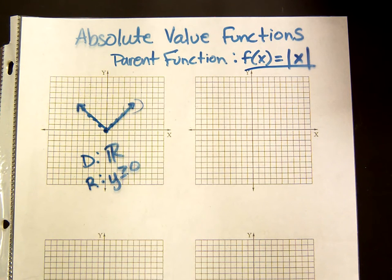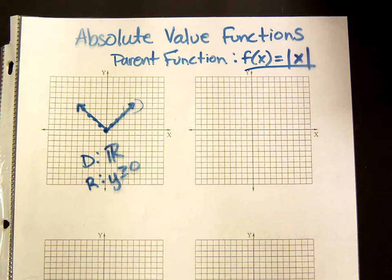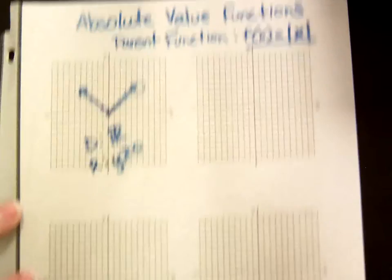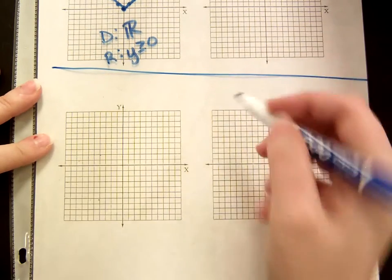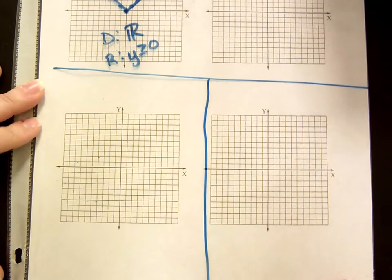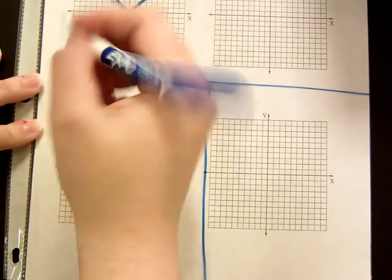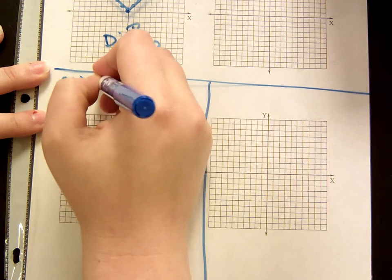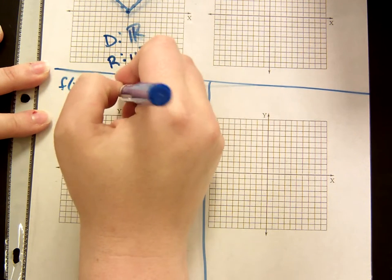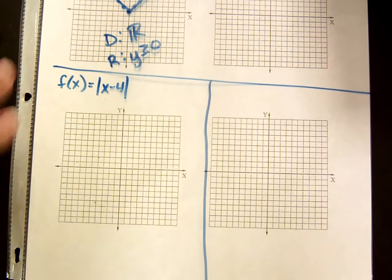What we're going to look at in this video is how to find the vertex and how to graph using a table. I'm going to take a couple of absolute value functions. Let's start with a simple one: absolute value of x minus 4.